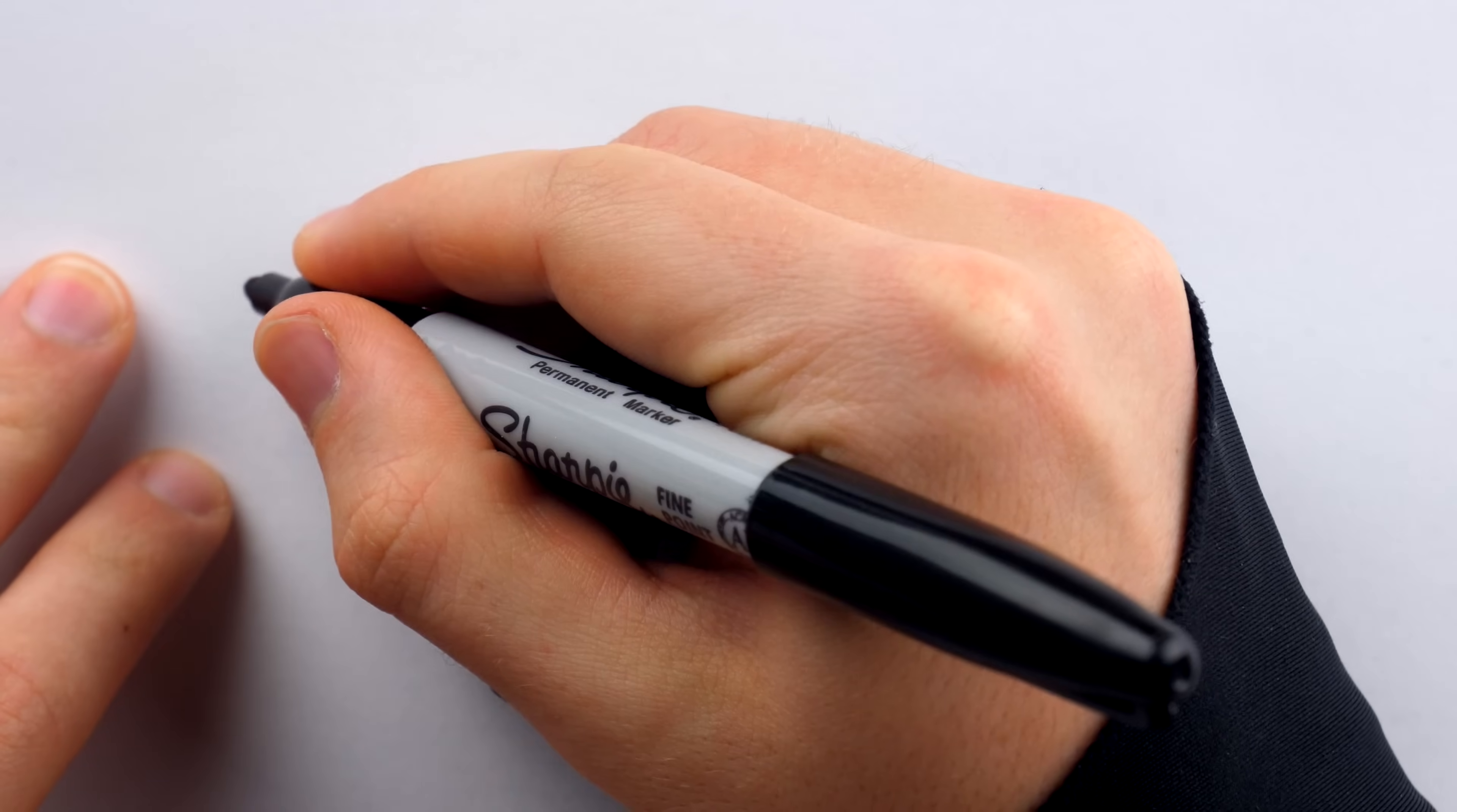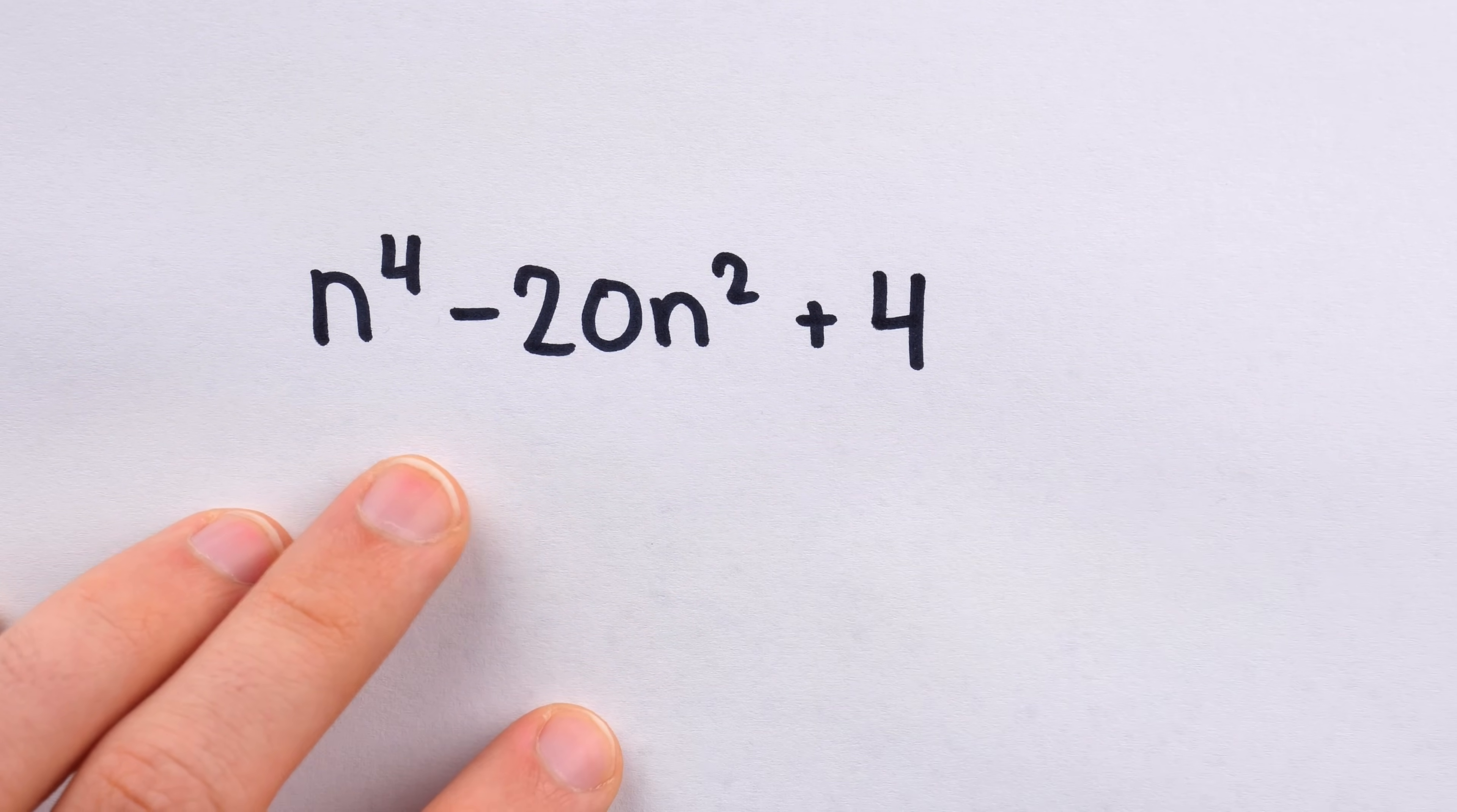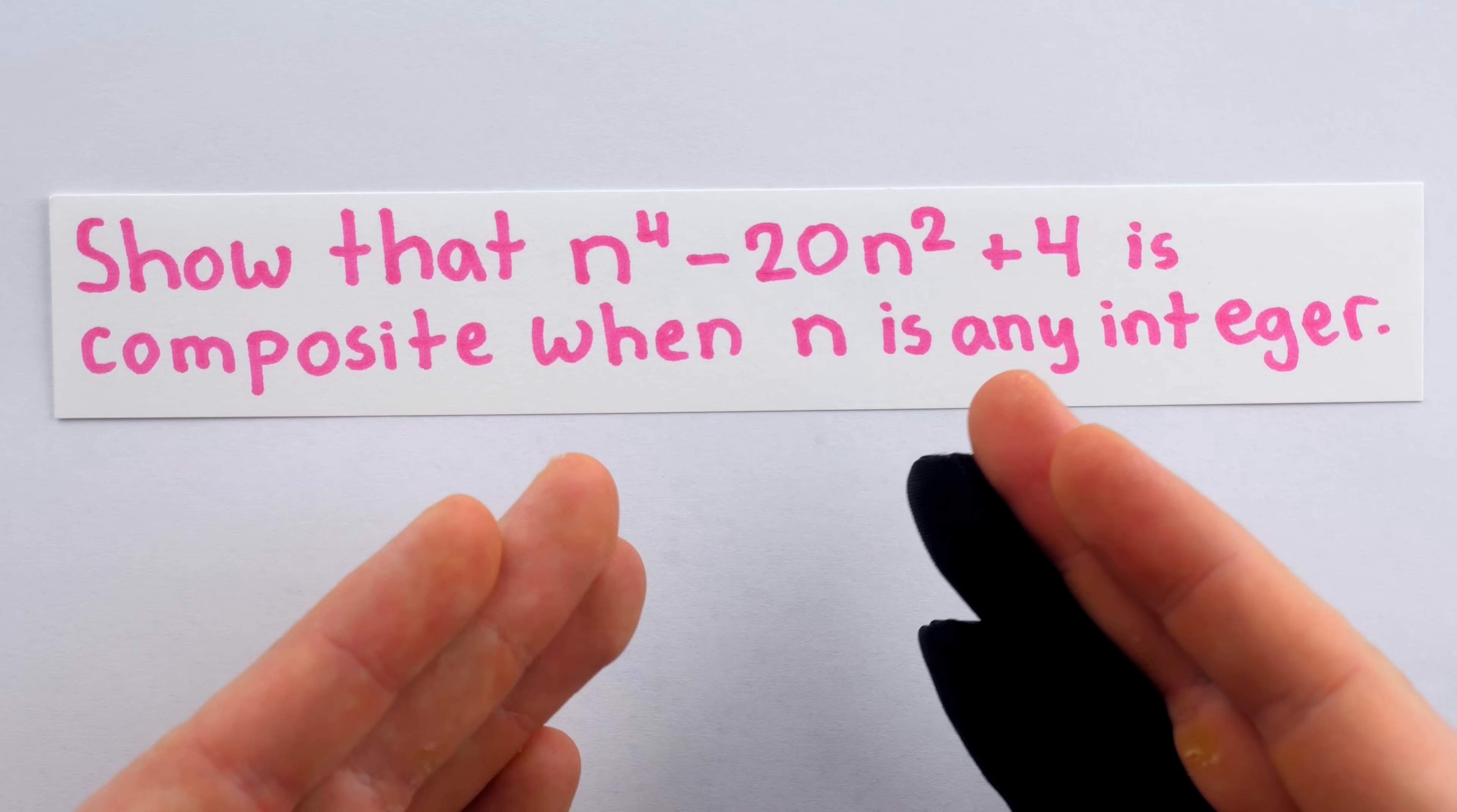Everybody loves a polynomial or function that generates a lot of prime numbers, which means that life is very hard as n to the power 4 minus 20n squared plus 4. I would not wish for my worst enemies to be reborn as this quartic polynomial. As we'll show today, n to the 4 minus 20n squared plus 4 is composite for every integer value of n, which means it's not interesting at all.